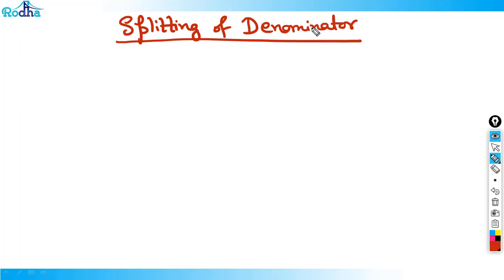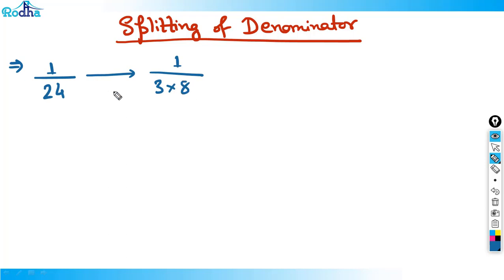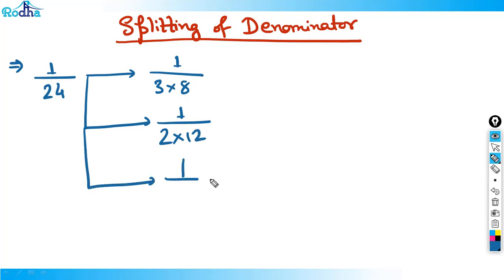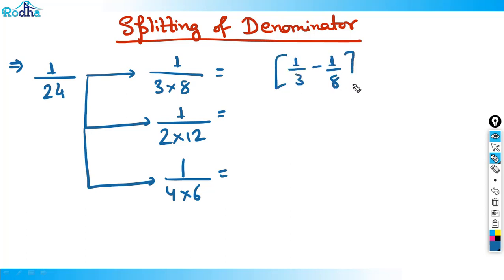So let's start with the different series here — splitting of denominator. How do you solve here? So if we have a number like 1 by 24, we can write this as 1 by 3 into 8, or 1 by 2 into 12, or 1 by 4 into 6. In each case, I want to write it in the form of something like 1 by 3 minus 1 by 8.